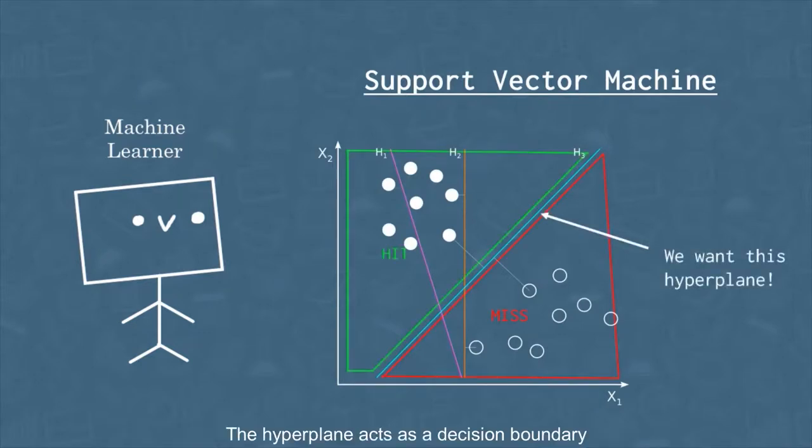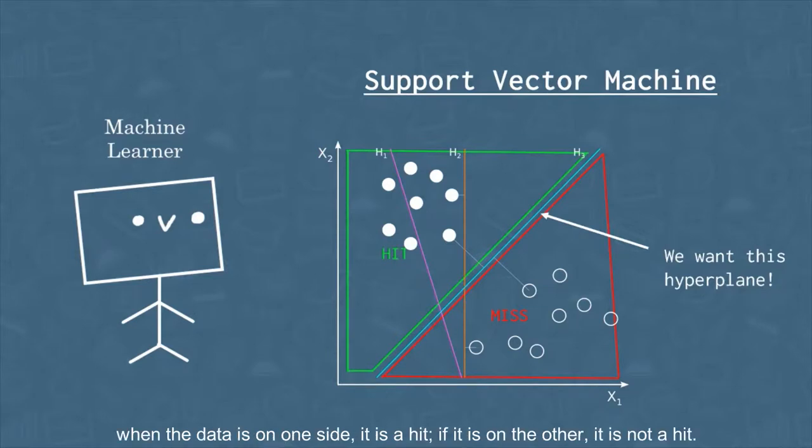The hyperplane acts as a decision boundary. When the data is on one side, it is a hit. If it is on the other, it is not a hit.